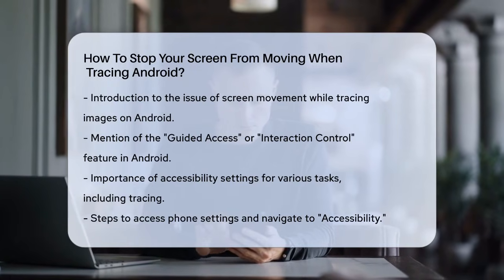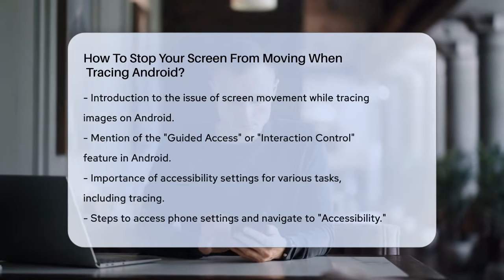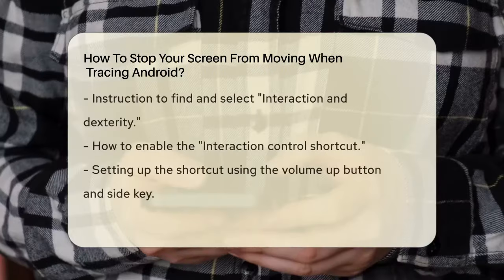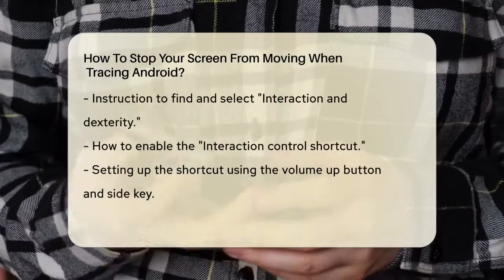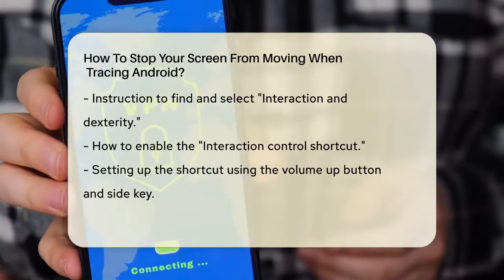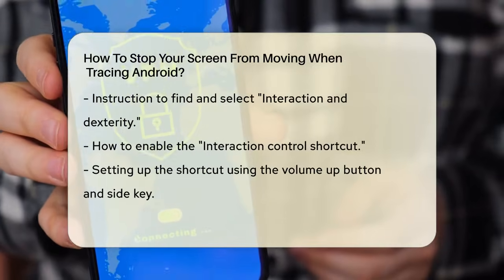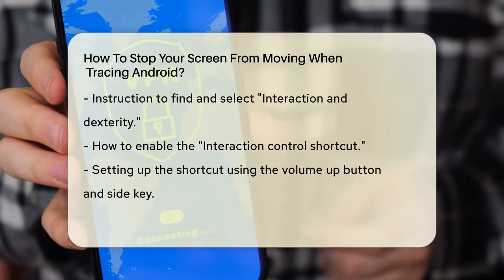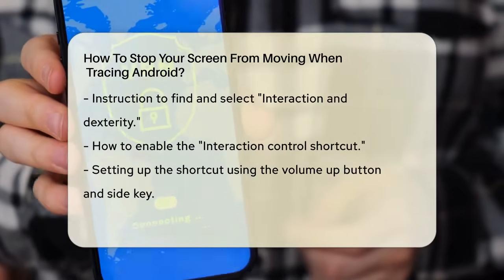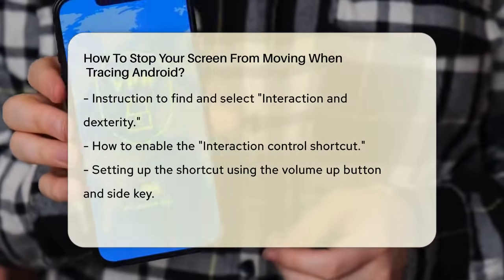To start, go to your phone's settings. Once you're in the settings menu, navigate to the accessibility section. Here you'll find an option called Interaction and Dexterity.